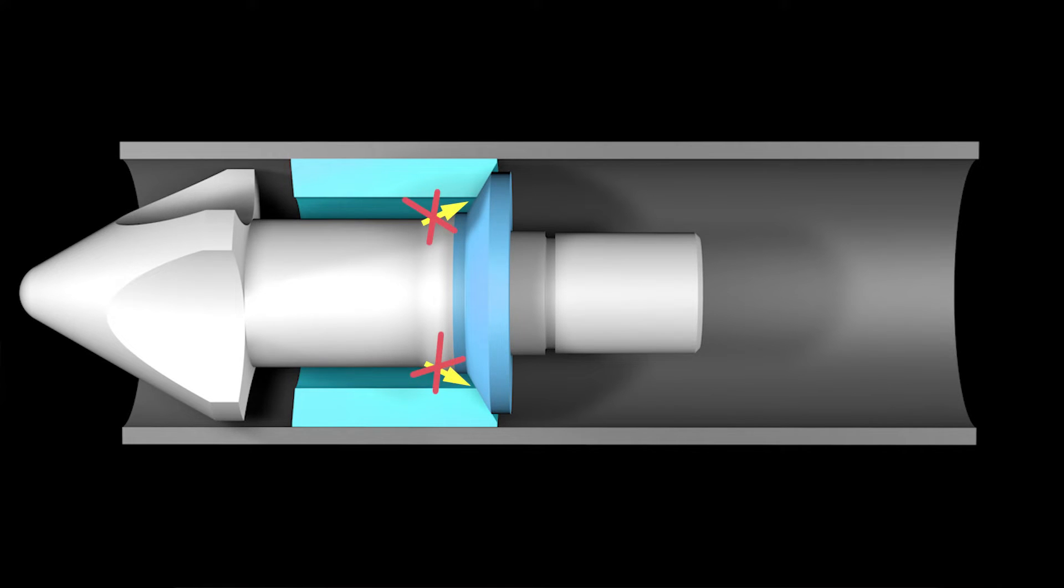The plastic cannot flow backwards, because when the screw pushes forward, a check ring is shoved against a thrust ring to block the backwards movement of the molten plastic. This forces the plastic into the mold.